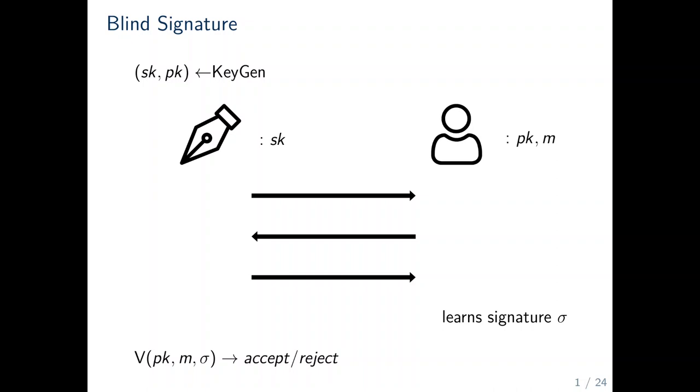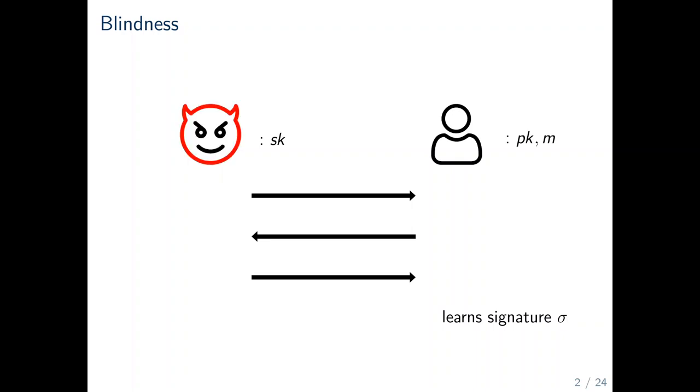Blind signatures come with two security properties, one more enforceability and blindness. In the blindness experiment, the adversary takes the role of a malicious signer. Intuitively,